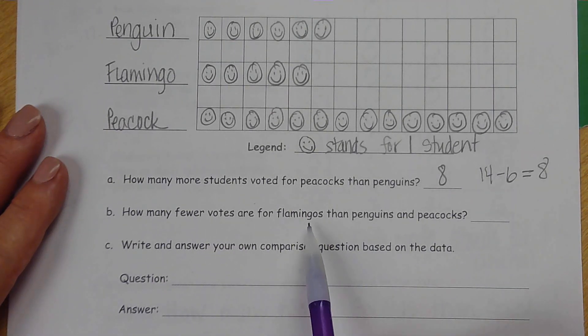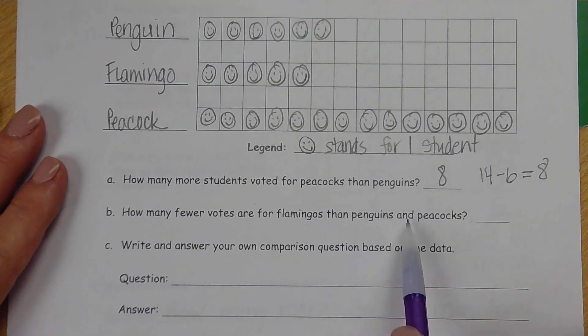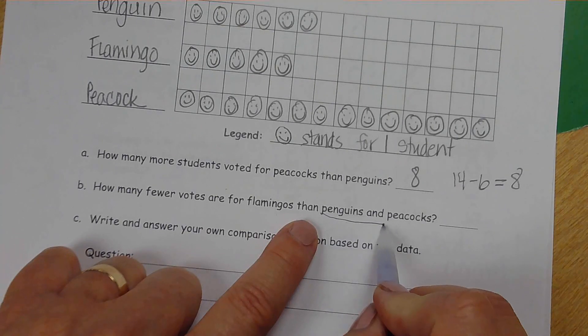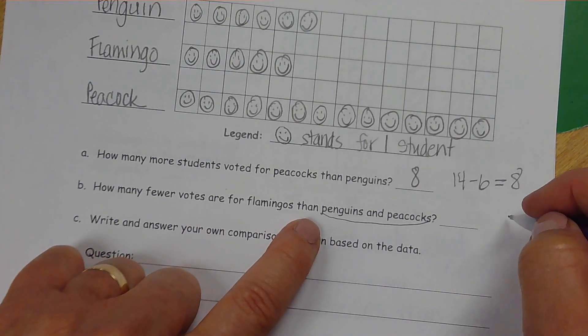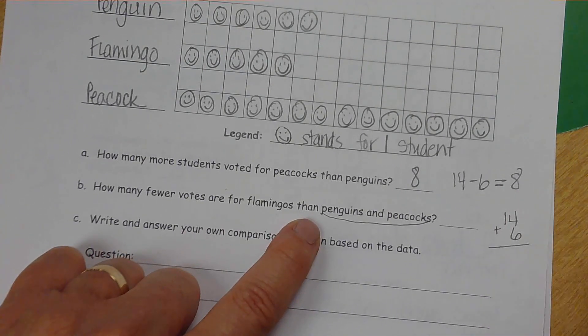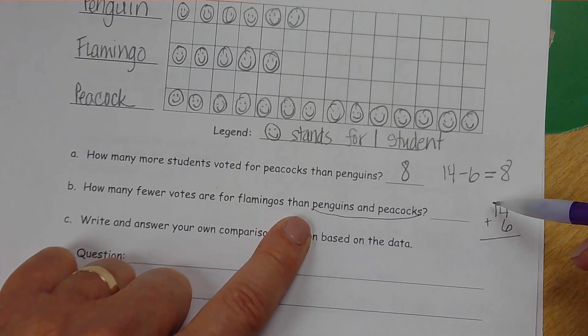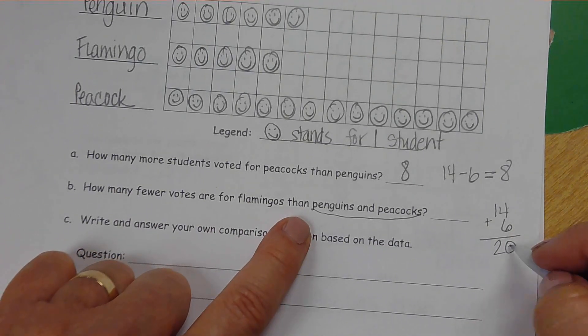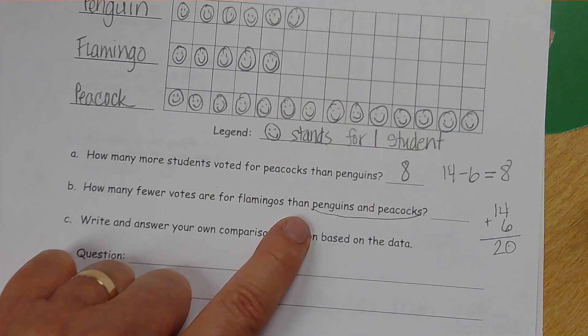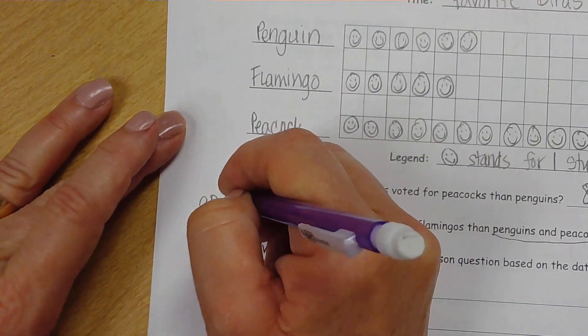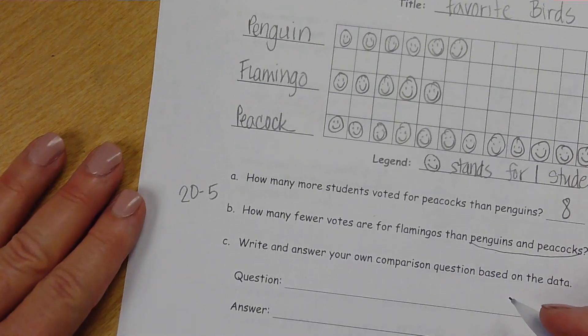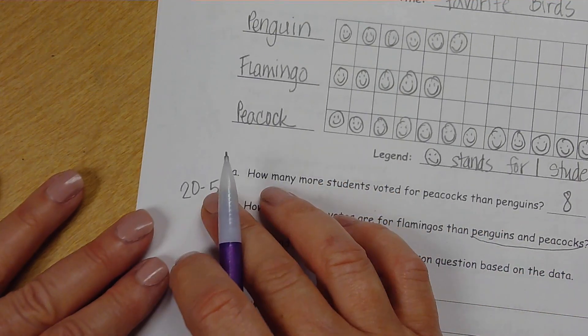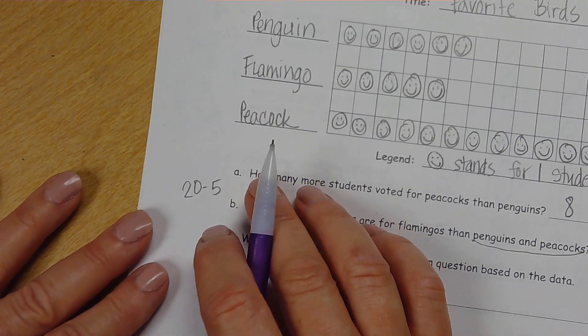How many fewer votes are for flamingos than penguins and peacocks? This is one of those two parts. We have to figure out how much penguins and peacocks are. So we have fourteen plus six. Oh, that's easy. I can make a ten. So I have one ten here, and then I have one ten here. So that's twenty. So how much more is twenty than the flamingos, which is only five?